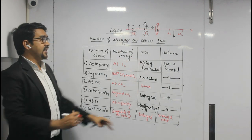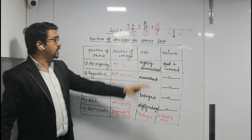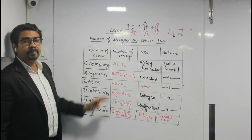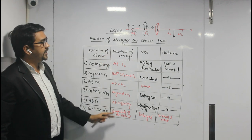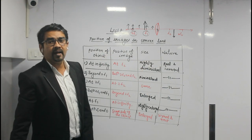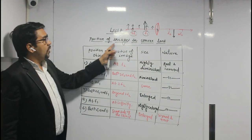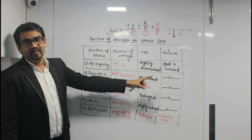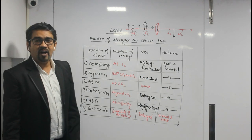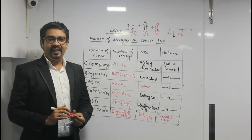I hope this simple trick helps you learn all the positions — position of the object, position of the images, size and nature of images in a convex lens. Thanks a lot. Thank you everyone. Bye.